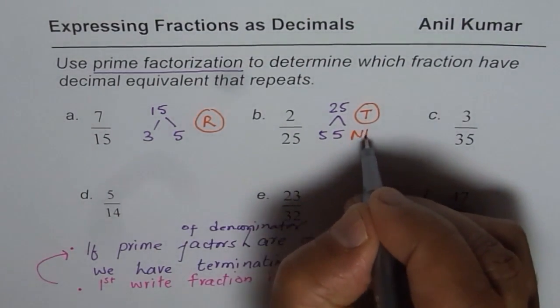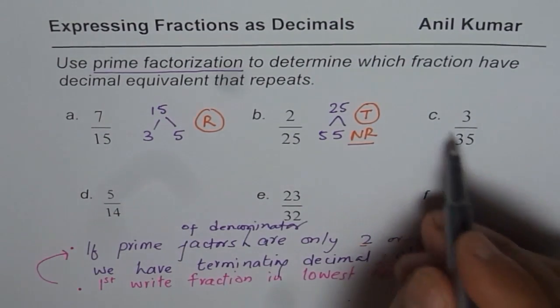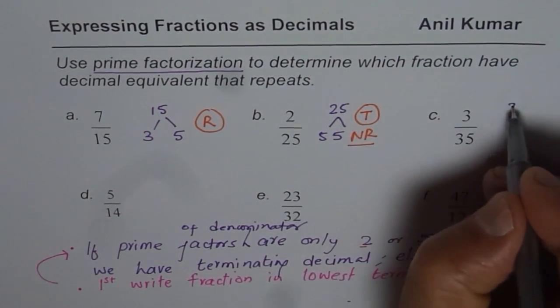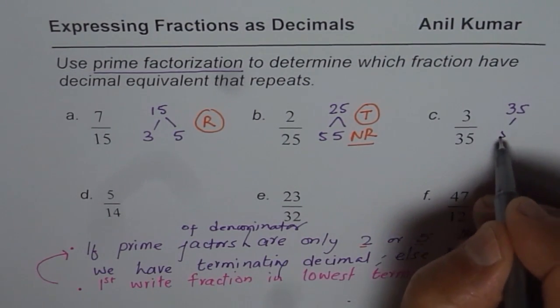Next one is 3 over 35. 35 has factors 5 times 7. Now 7 makes it repeating decimal, so this one is again repeating decimal.